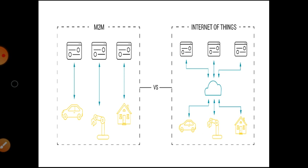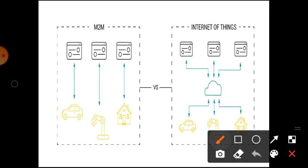This is the diagram comparing M2M and IoT. In M2M, we can send data or exchange information from machine to machine — for example, from car to machine, from machine to machine, or from home to machine. In Internet of Things, we can send or exchange information from machine to machine through the internet, connecting cars, machines, and homes through the internet.